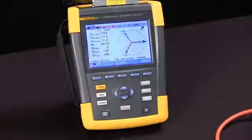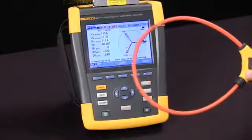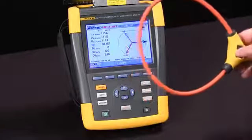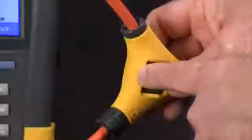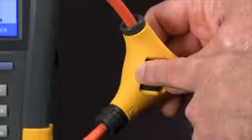The way to see when you have a difference, or if you need to make a correction for the current clamp, is to look for an arrow on the inside of the CT that should be pointed towards the load.